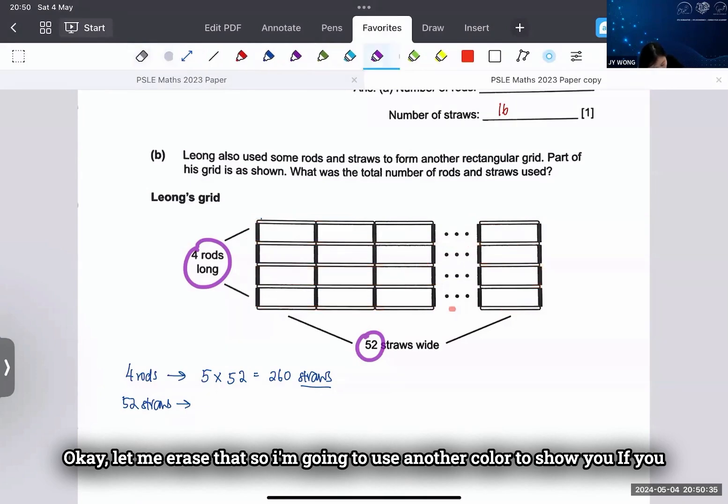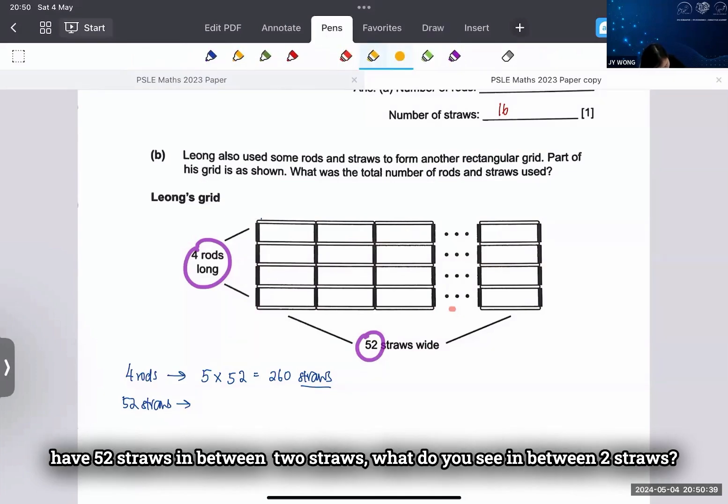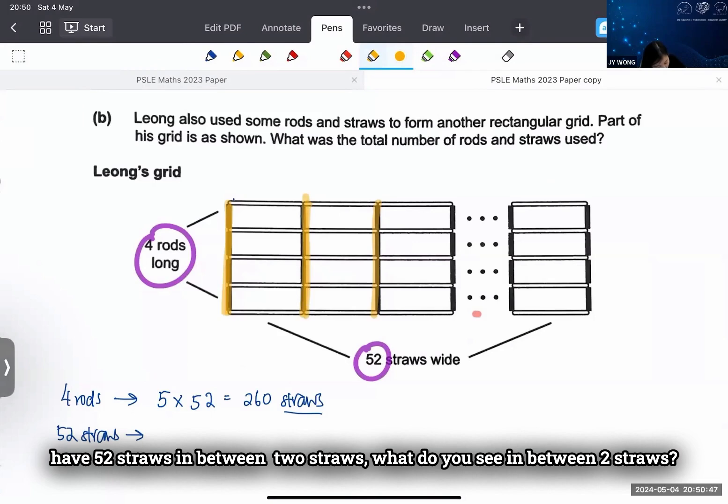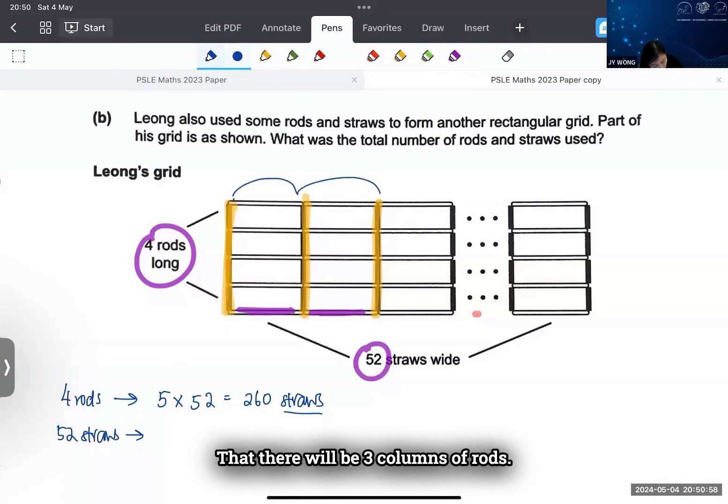Okay, let me erase that so I'm going to use another color to show you. If you have 52 straws, in between two straws, what do you see? In between two straws, there will be columns of rods.